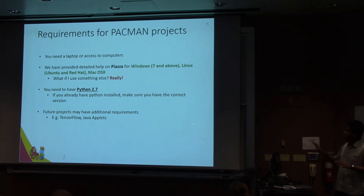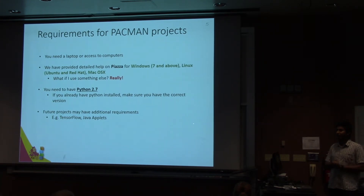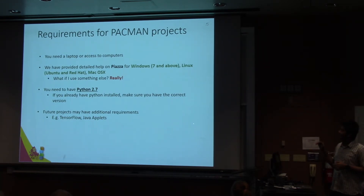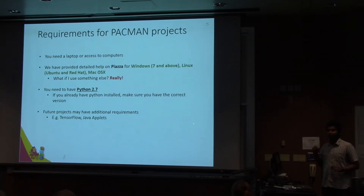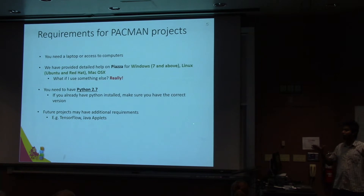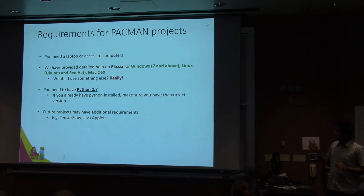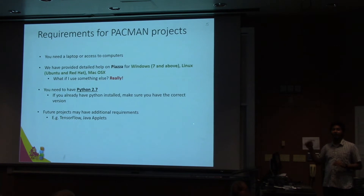On a rough scale, these are the requirements for the Pac-Man projects. You'll need a laptop, though you can work on any of the lab machines as well. We will give support for Windows 7, Linux, Mac OS — Ubuntu and Red Hat specifically. These are the ones we know well, but you can Google for others. You will need Python 2.7, which is the version the Pac-Man projects use — it's an already set-up library and you'll be filling in code blocks. For future projects, you will need TensorFlow and Java applets, which we'll cover as we progress.